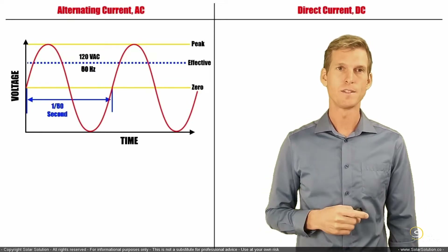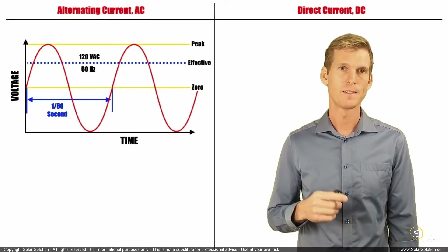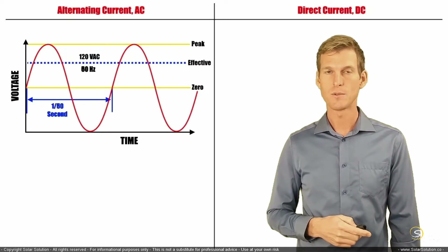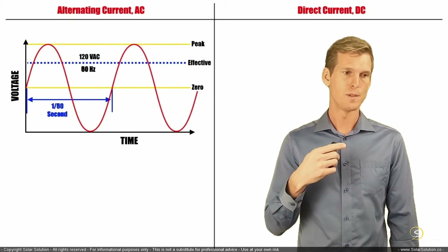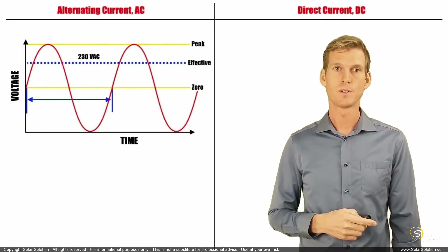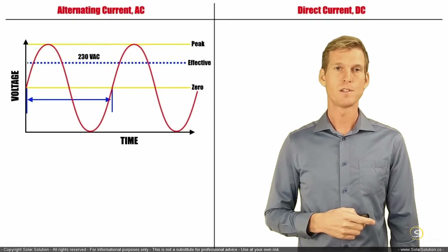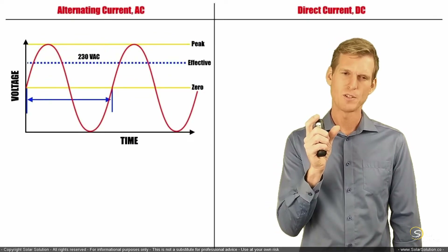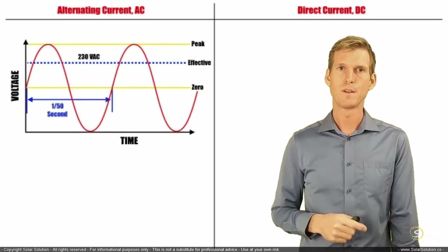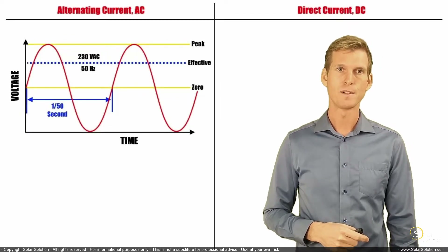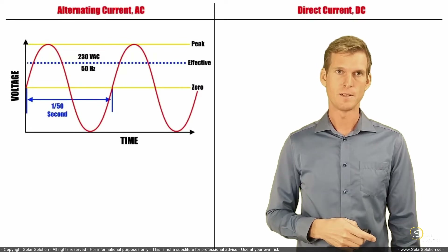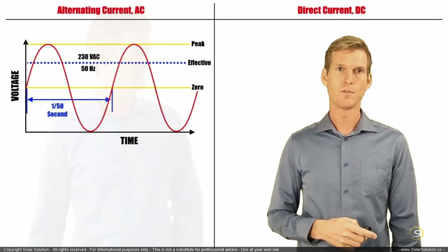Depending where you are in the world, you can also operate on a different voltage or frequency. You can be working on 230-volt AC with a frequency that's slightly shorter — typically 50 hertz — so it takes one-fiftieth of a second to complete a full sinusoidal wave.